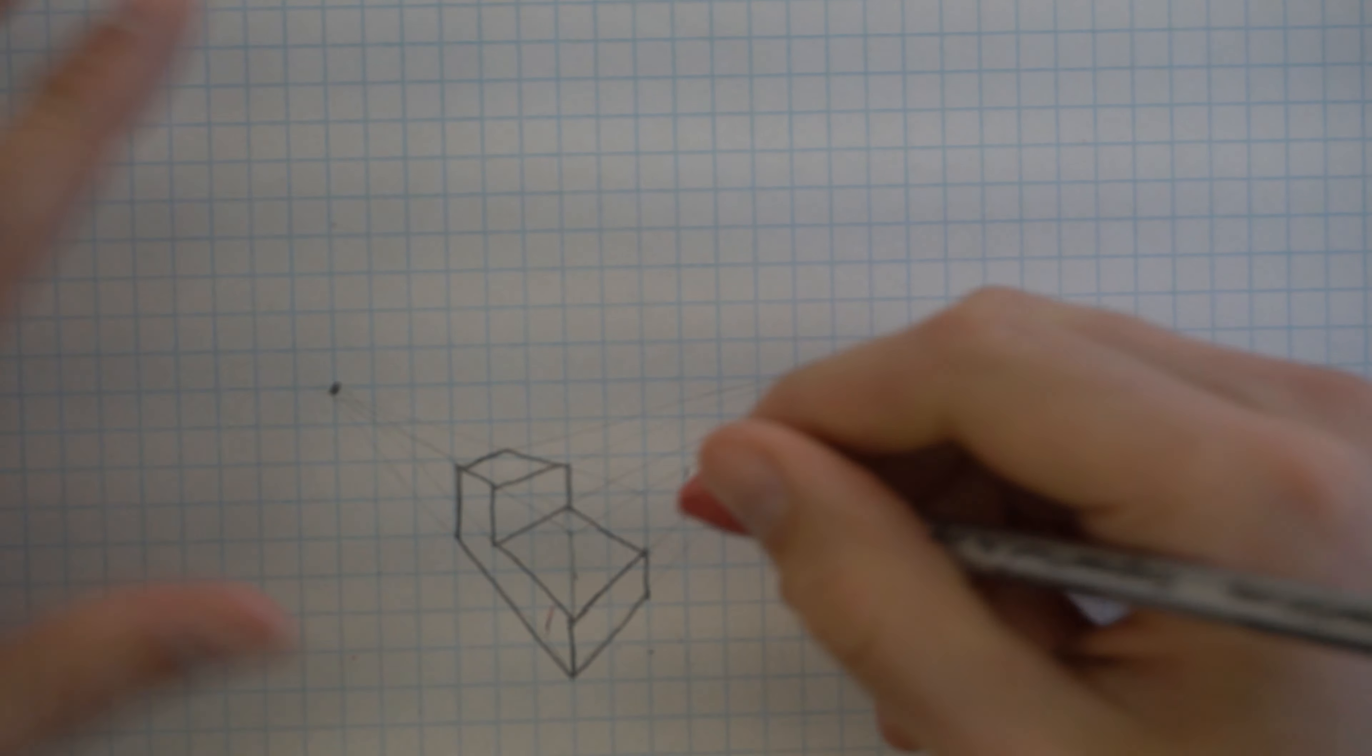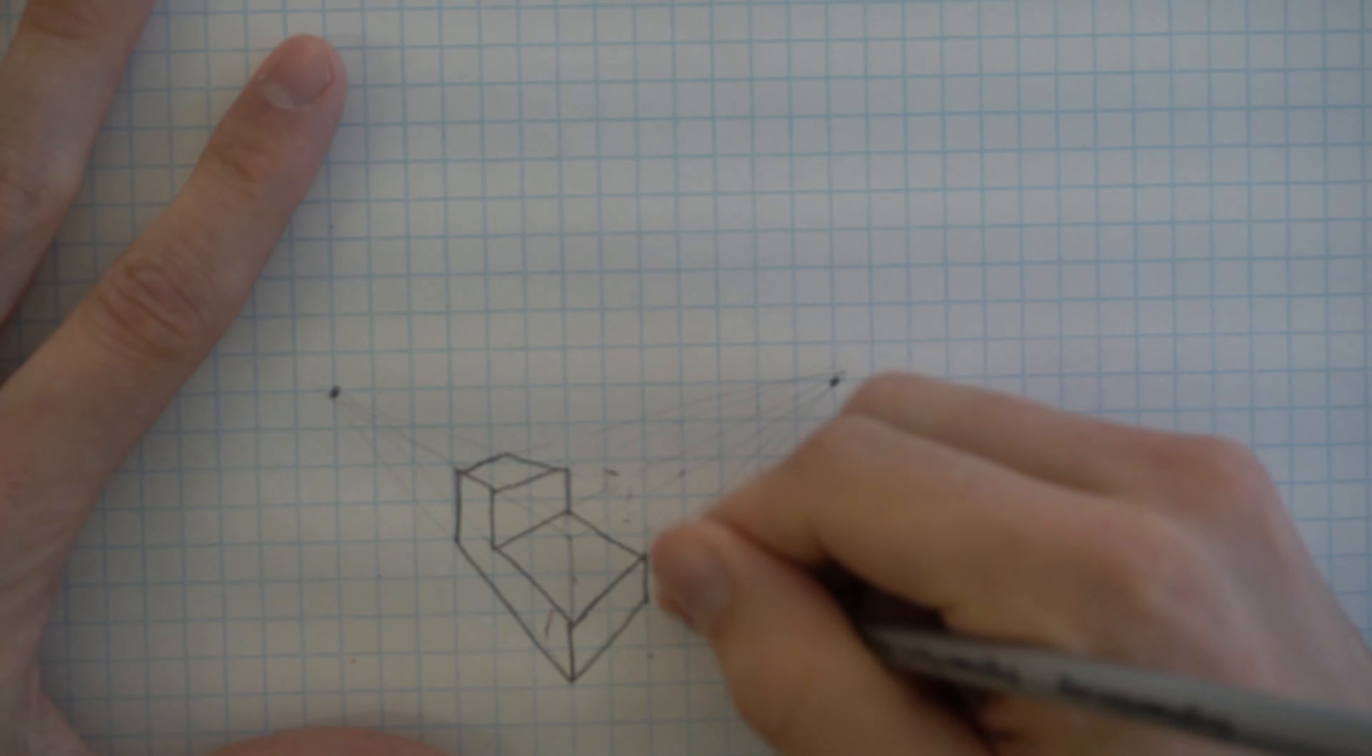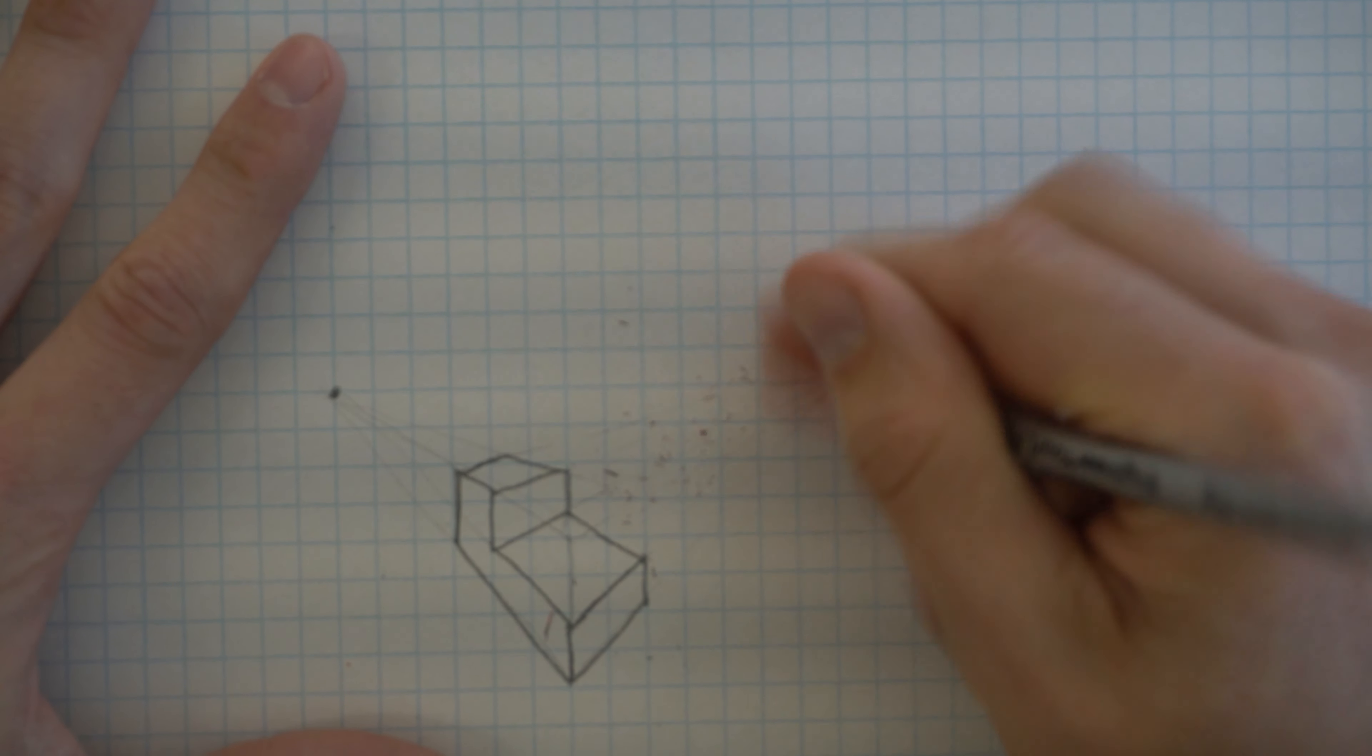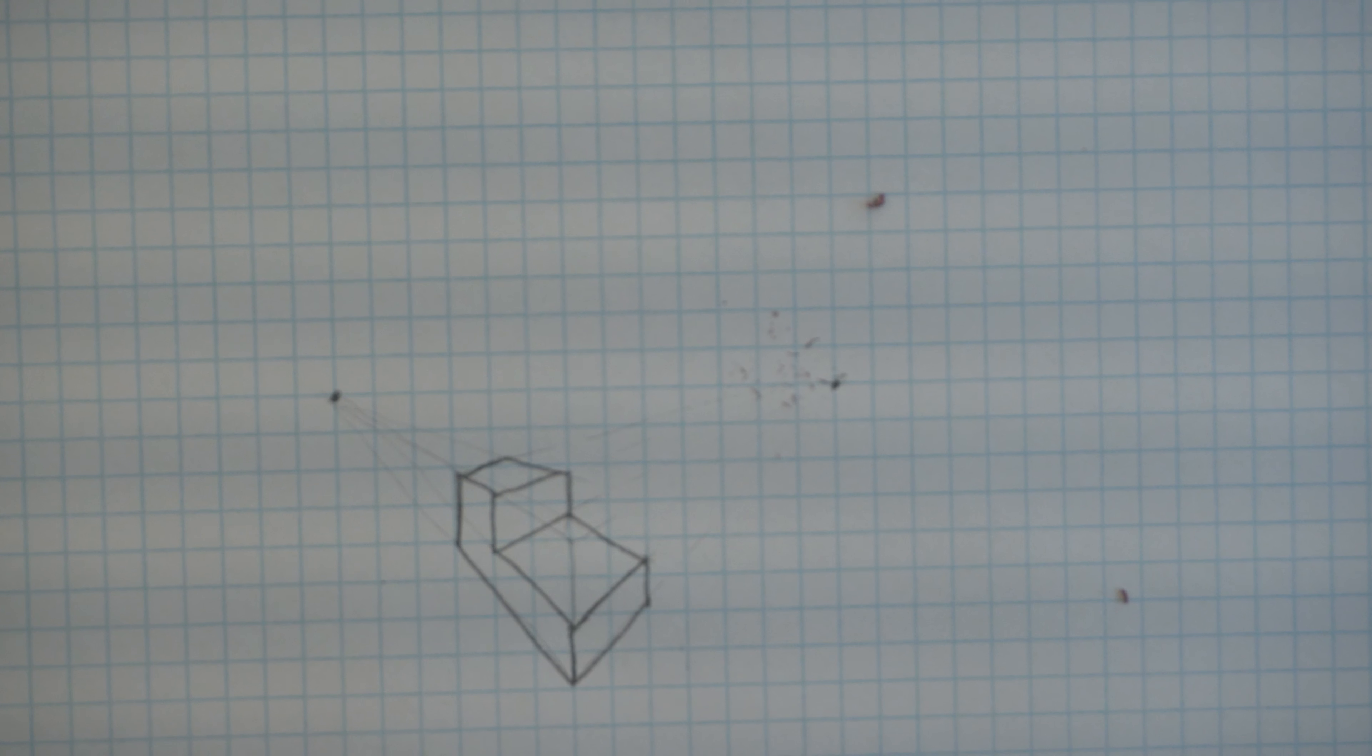You get something like this and then you would just go in and you would erase all of your construction lines. So that is two-point perspective drawing.